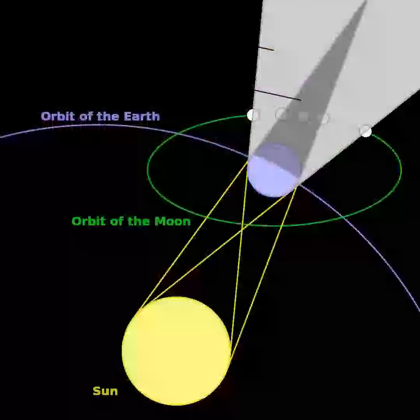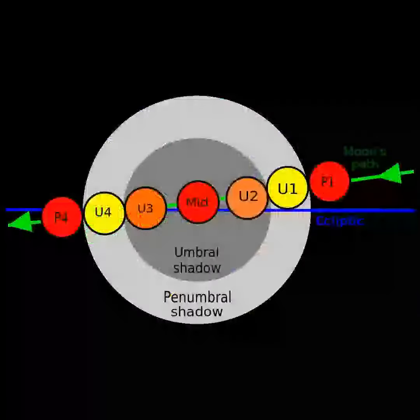Thus, the longer wavelengths predominate by the time the light rays have penetrated the atmosphere. Human vision perceives this resulting light as red. This is the same effect that causes sunsets and sunrises to turn the sky a reddish color.